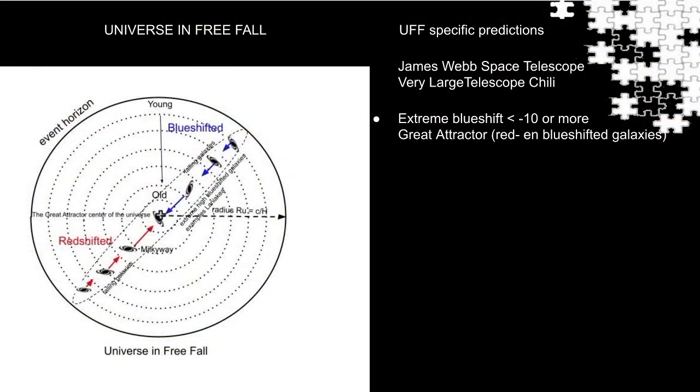To conclude I have made a list of predictions that could be measured by the new generation telescopes. And here's the list. Half the distant sky is blue shifted as stated earlier before in this presentation.